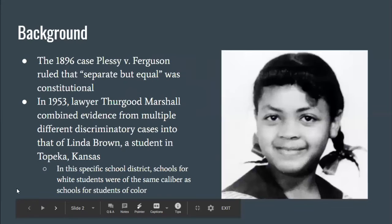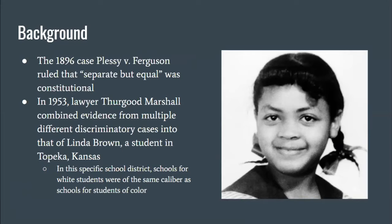Some background on the case. Way before, in 1896, the case Plessy v. Ferguson was taken to the Supreme Court, and it was ruled that separate but equal was constitutional in schooling and all cases of segregation. However, in 1953, lawyer Thurgood Marshall combined evidence from multiple different discriminatory cases in school districts around the country into that of Linda Brown.